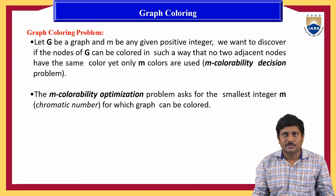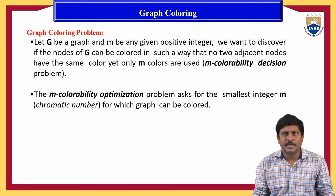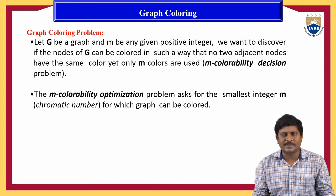Graph coloring. First we discuss what is meant by the graph coloring problem. The graph coloring problem is: let G be a graph and M be any given positive integer. We want to discover if the nodes of G can be colored such that no two adjacent nodes have the same color, yet only M colors are used. The M colorability optimization problem asks for the smallest integer n — called the chromatic number — for which the graph can be colored.